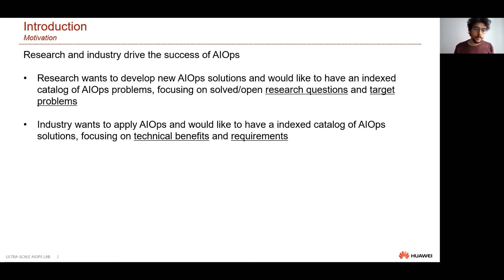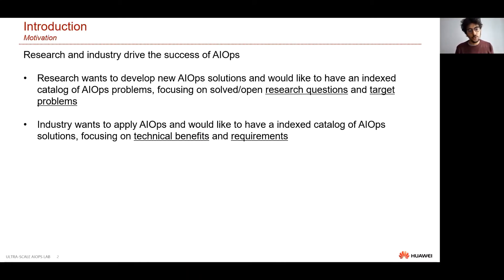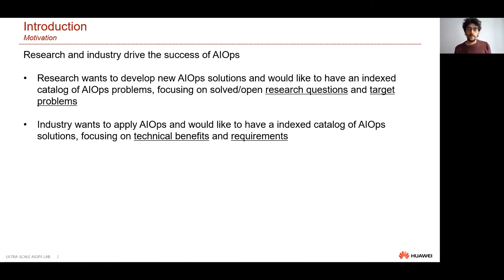From an industry perspective, what is important would be to have a catalog — an index catalog of solutions — mostly focusing on their technical benefits, so which parts or components of an IT system they can improve and what are the requirements needed in order to run them.